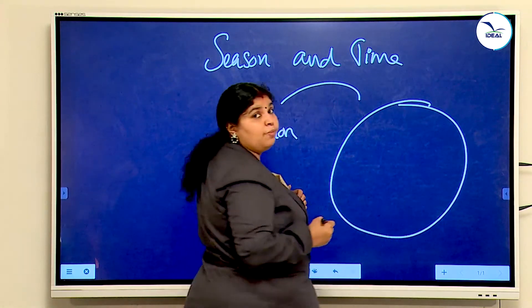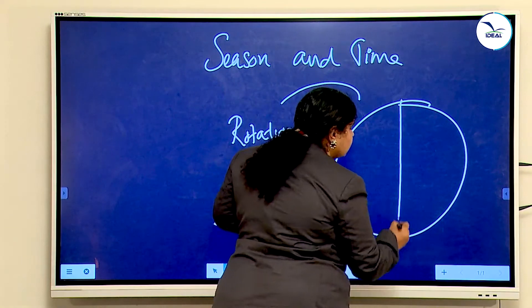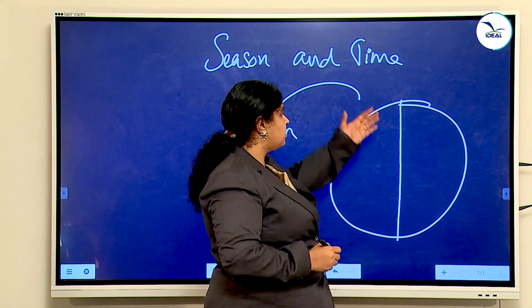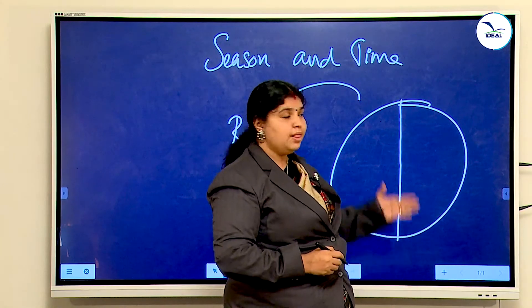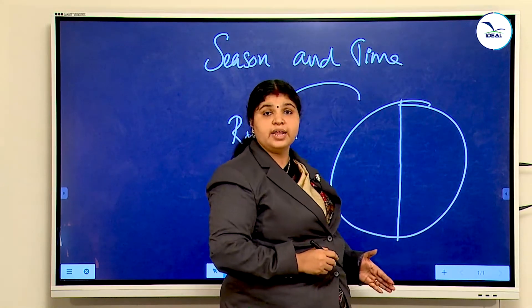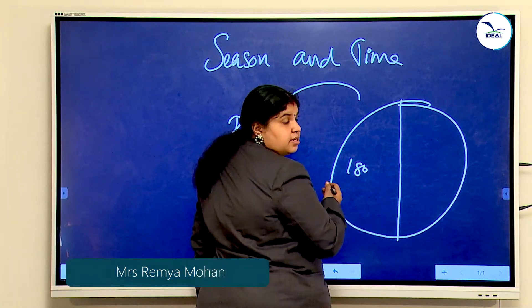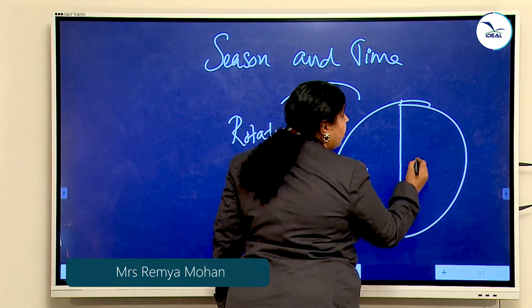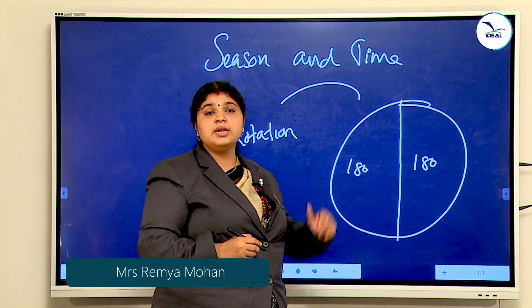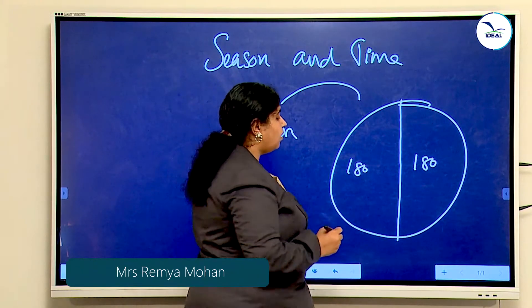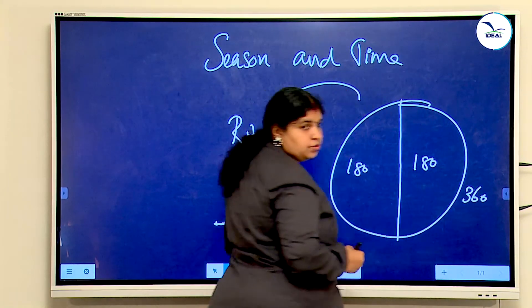First, I am going to teach you about longitudes. What is longitude? The long lines that pass from the North Pole to South Pole are called longitudes. There are 180 longitudes in the western hemisphere and 180 longitudes in the eastern hemisphere, making a total of 360 longitudes.